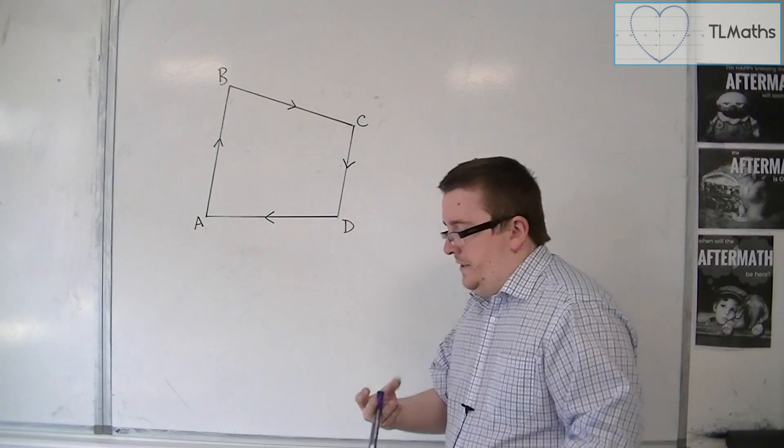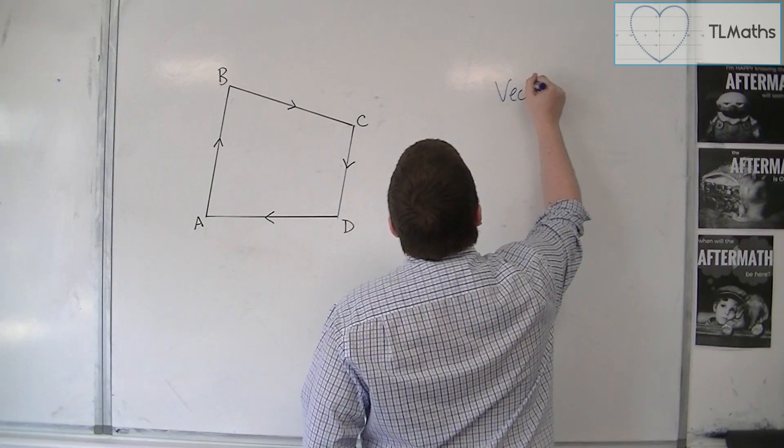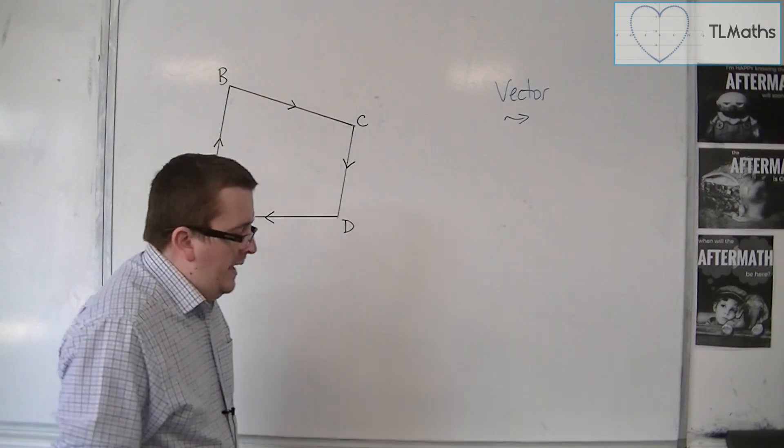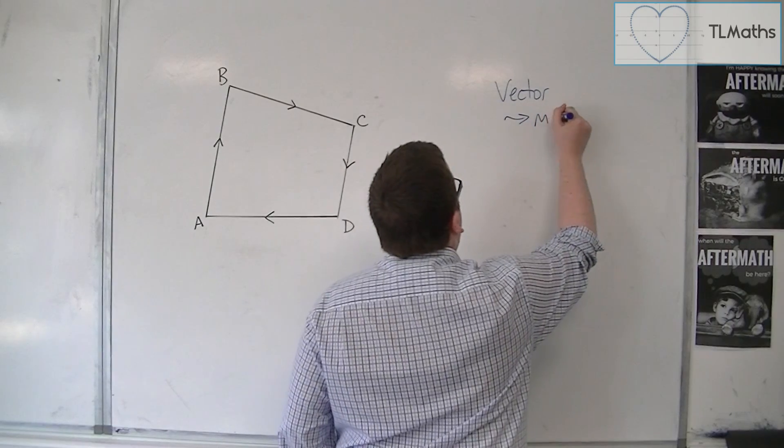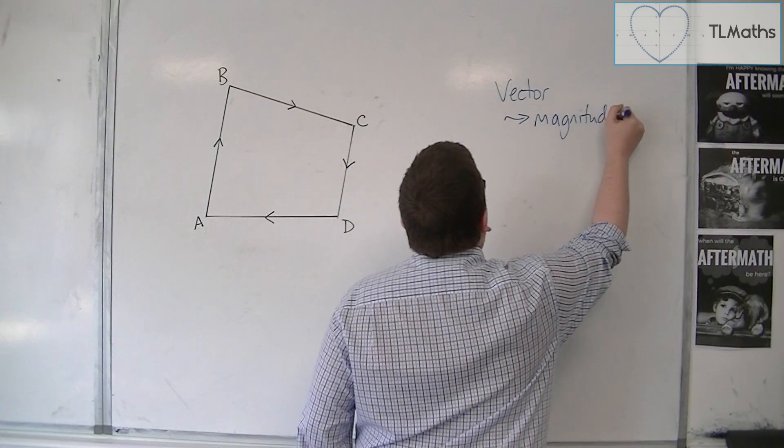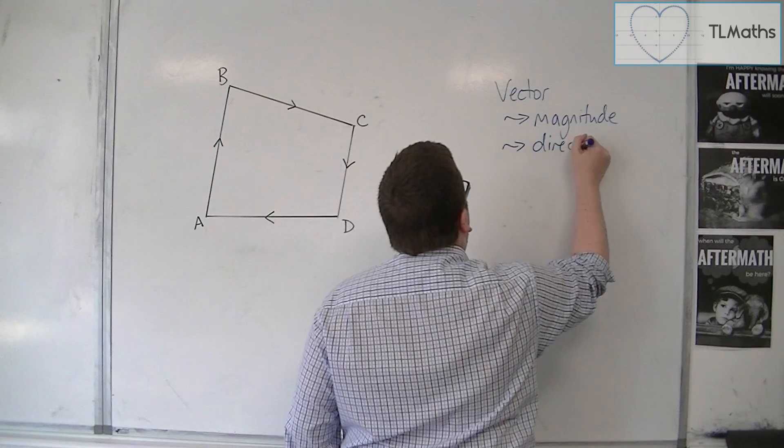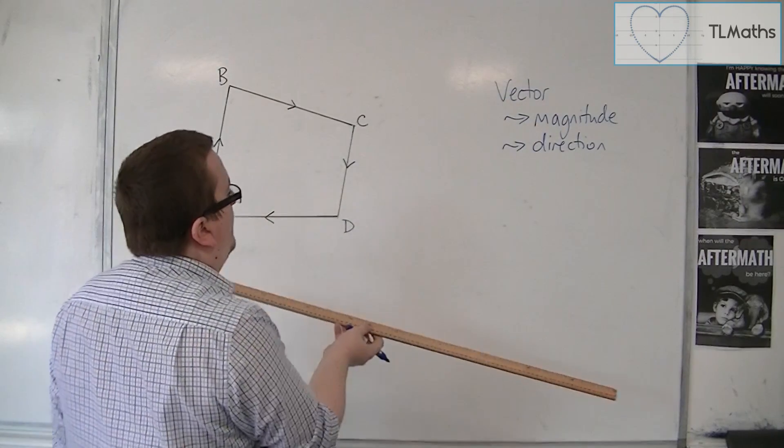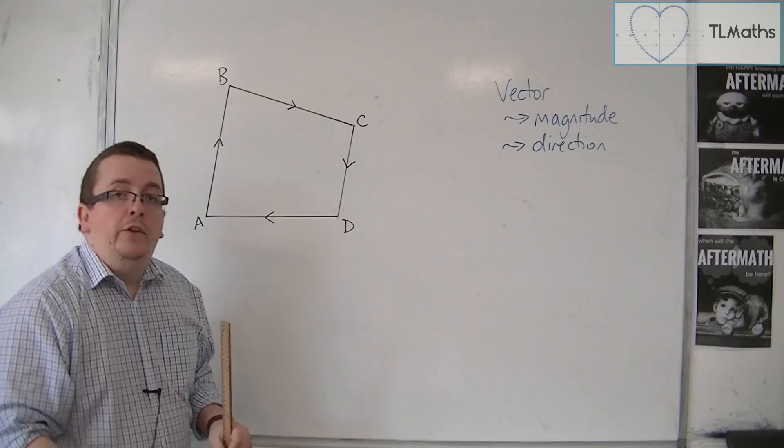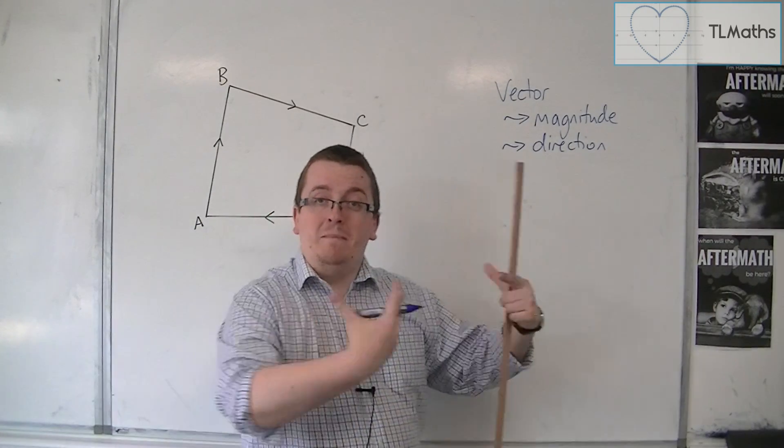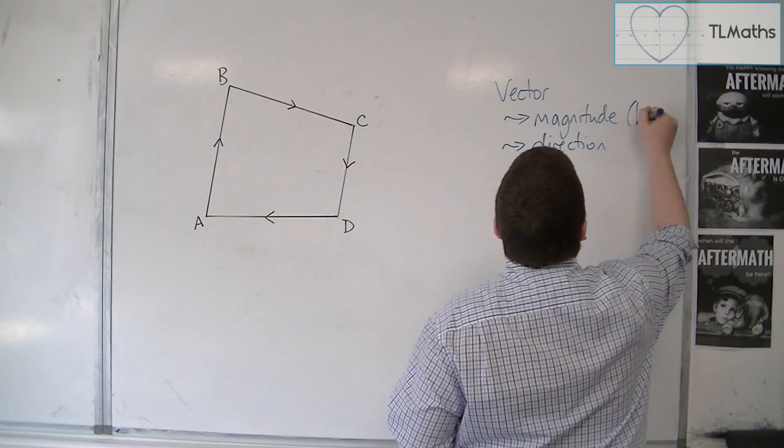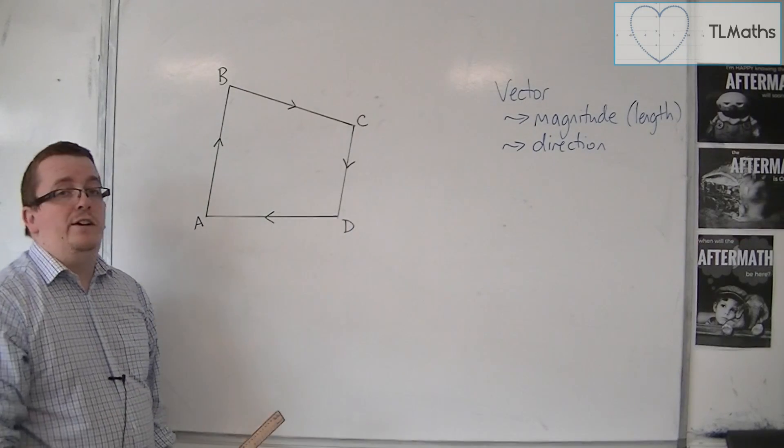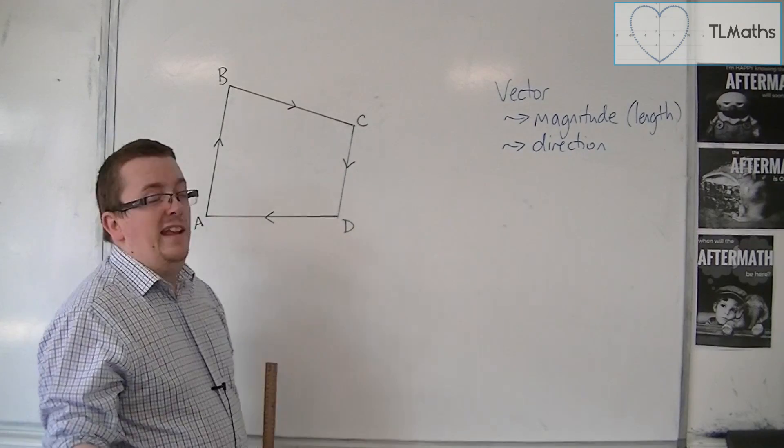A vector is a line that has two things: it has a magnitude and a direction. Now any old line has magnitude, because it has a certain length. So the magnitude you can think of as the amount. The magnitude is the length of the line. Any line that I draw on this whiteboard will have a certain length attributed to it, and hence will have a magnitude.